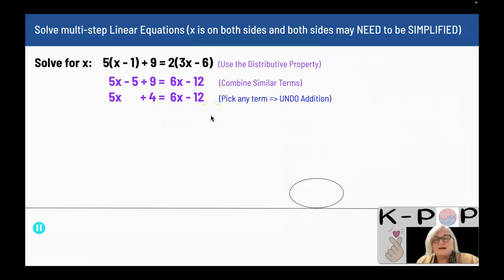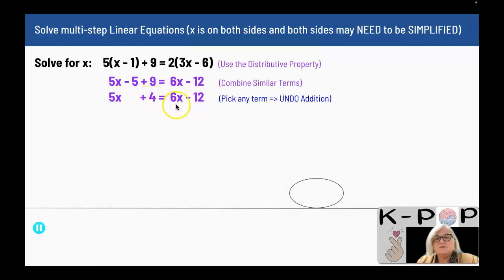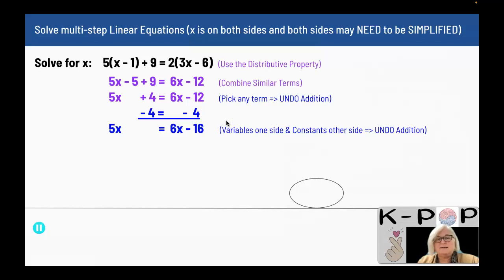Now comes the time where I start to undo what is happening to the x, and what I do to one side I must do to the other side. I pick any term — I am going to choose the plus 4 — and move it to the other side by subtracting 4 from both sides. When I subtract 4 from both sides, I end up with 5x equals 6x minus 16.